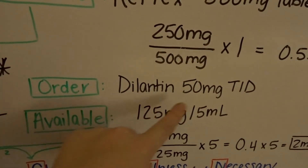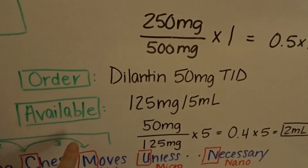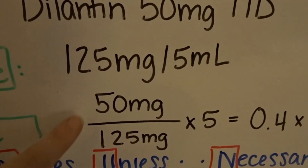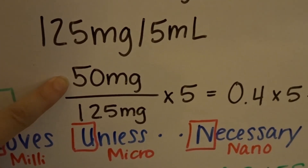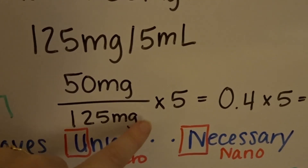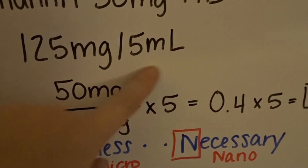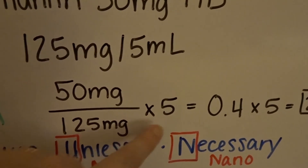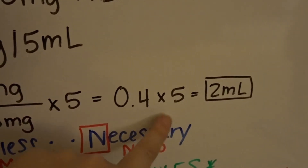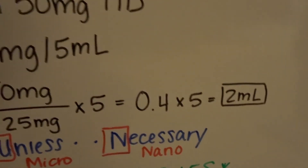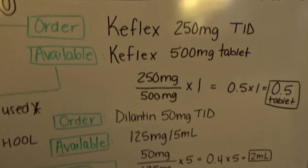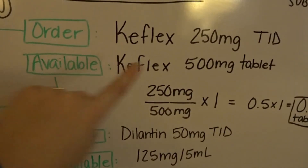Our second example: the order is 50 milligrams three times a day, available is 125 milligrams per 5 ml. Our order is 50 milligrams. What is available? Available is 125 milligrams, times the quantity, which is per 5 ml, so we put a 5 there. So 50 divided by 125 gives us 0.4, times our quantity of 5, which means you're going to be giving 2 ml. Those are just two examples of the desired-over-have formula.